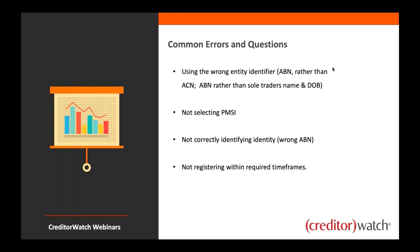Another common error is businesses supplying physical goods — inventory, stock and the like — to their customers but not selecting the PMSI registration, or Purchase Money Security Interest. It's really important to select that, as the purchase money security interest gives you super priority on the register. It also means that an administrator of any client you're dealing with can't necessarily liquidate your stock, and you can enforce that retention of title.